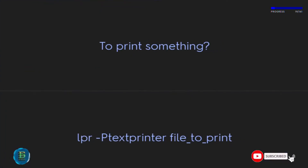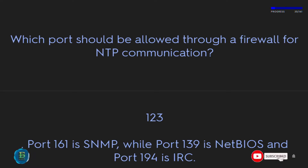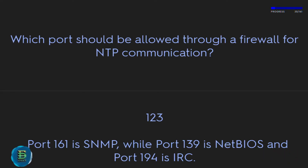To print something, use: lpr textfile or the file to print. Which port should be allowed through a firewall for NTP communication? Port 123. Port 161 is SNMP, port 139 is NetBIOS, and port 194 is IRC.